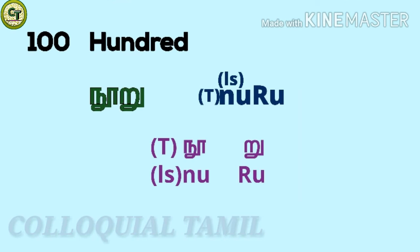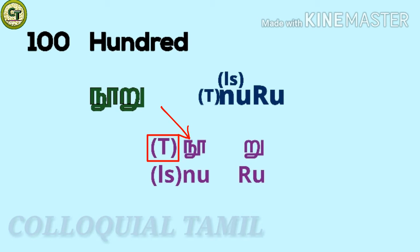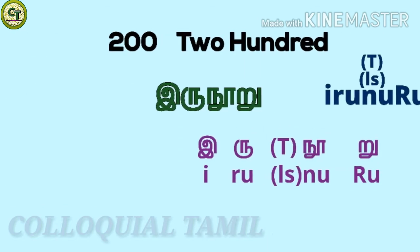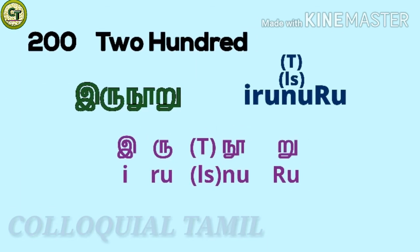For hundred: noo ru. Noo is a long sound letter — since it's a long sound letter, I put 'ls' to represent it. This noo belongs to the group of na letters, which comes after the group of tha letters, so I put capital T to represent it. While pronouncing it, your tip of the tongue touches the back of your teeth. Then ru — a short sound letter. Together: noo ru.